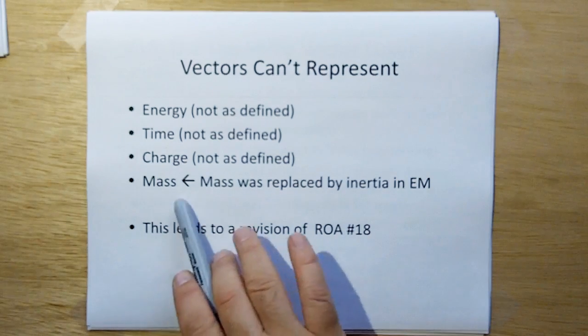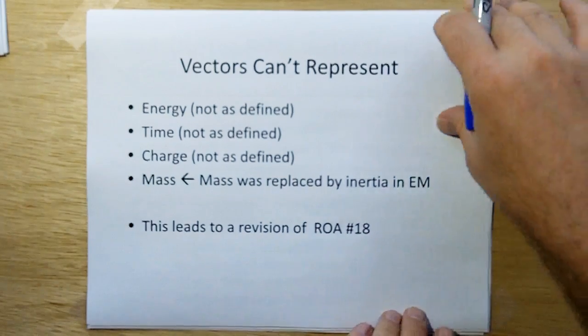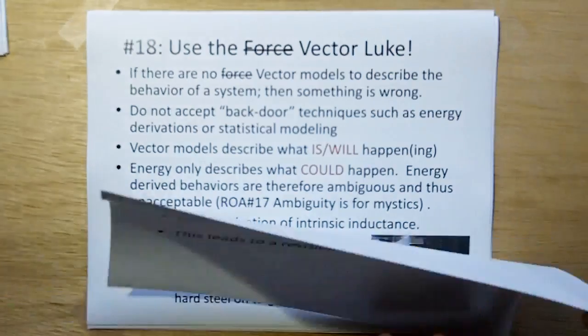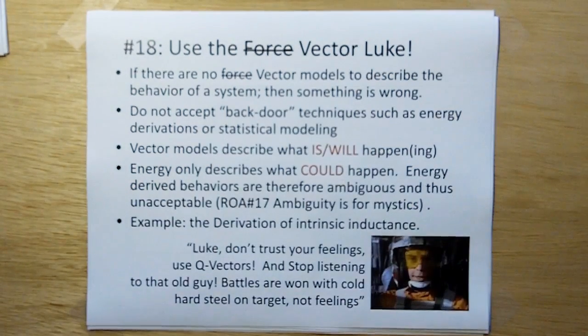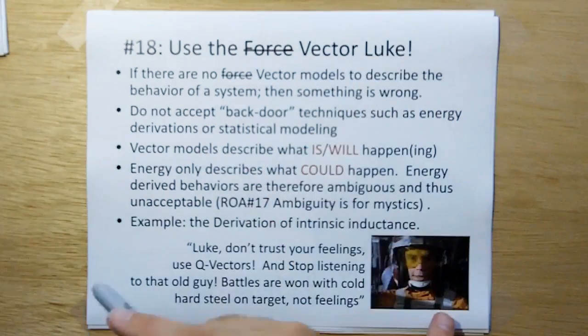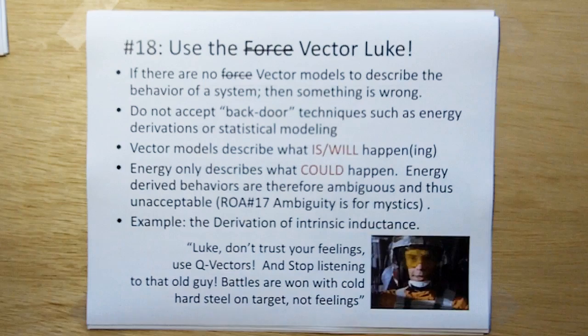Recently in ethereal mechanics, we redefined mass. Mass couldn't be defined in terms of a vector, but now it can. Because now mass is being replaced by inertia in ethereal mechanics. So this leads to a revision of rule of acquisition number 18, which used to read, use the force Luke. And I've reworded it now, use the vector Luke. Because remember we said before, on an inertialist body, force as a vector may be meaningless.